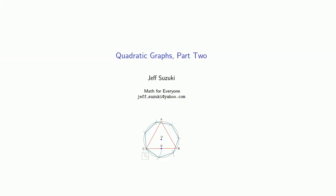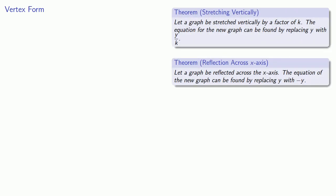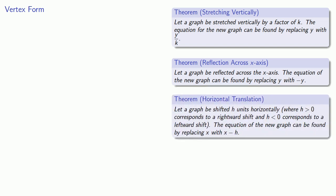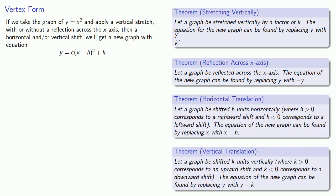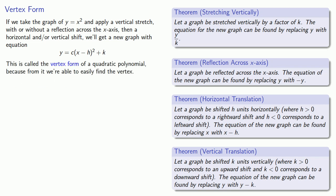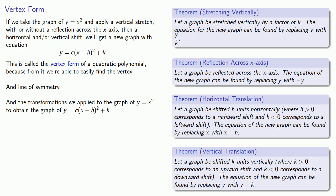What else can we do with the graph of y equals x squared? If we take the graph of y equals x squared and apply a vertical stretch, with or without a reflection across the x-axis, then a horizontal and/or vertical shift, we get a new graph with the equation of the form y equals c times x minus h squared plus k. This is called the vertex form of a quadratic polynomial because from it we can easily find the vertex, the line of symmetry, and the transformations applied to obtain the new graph.